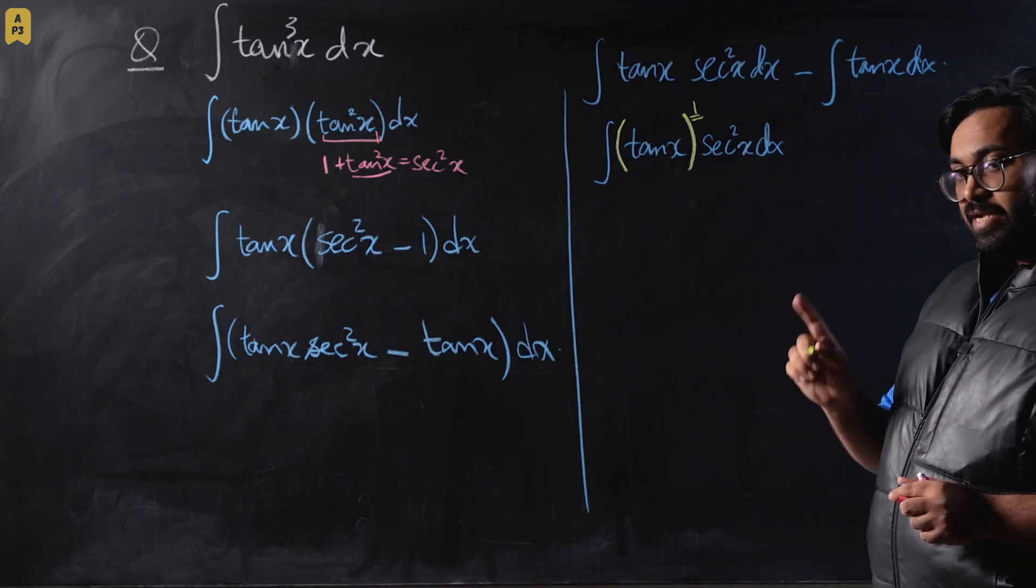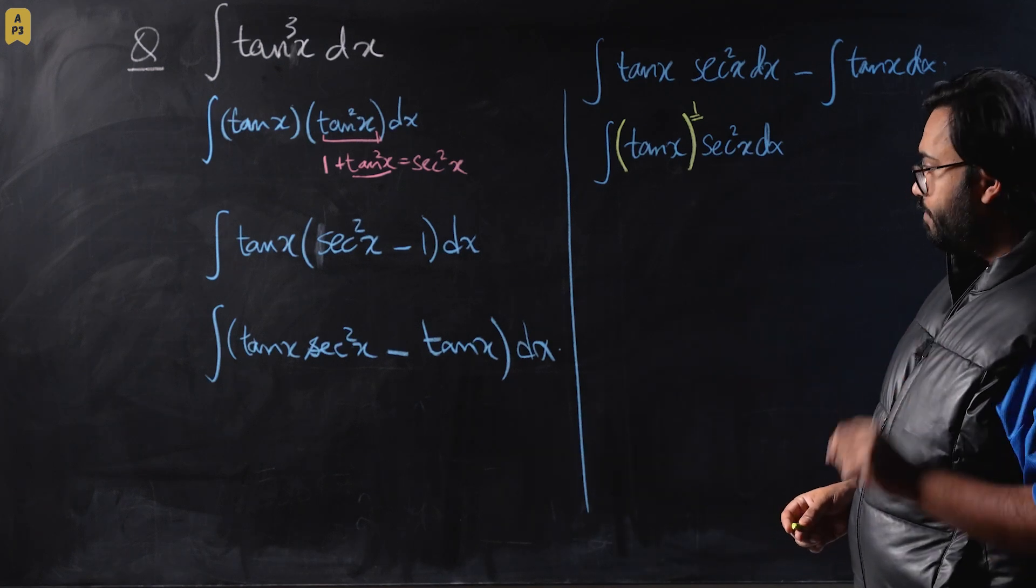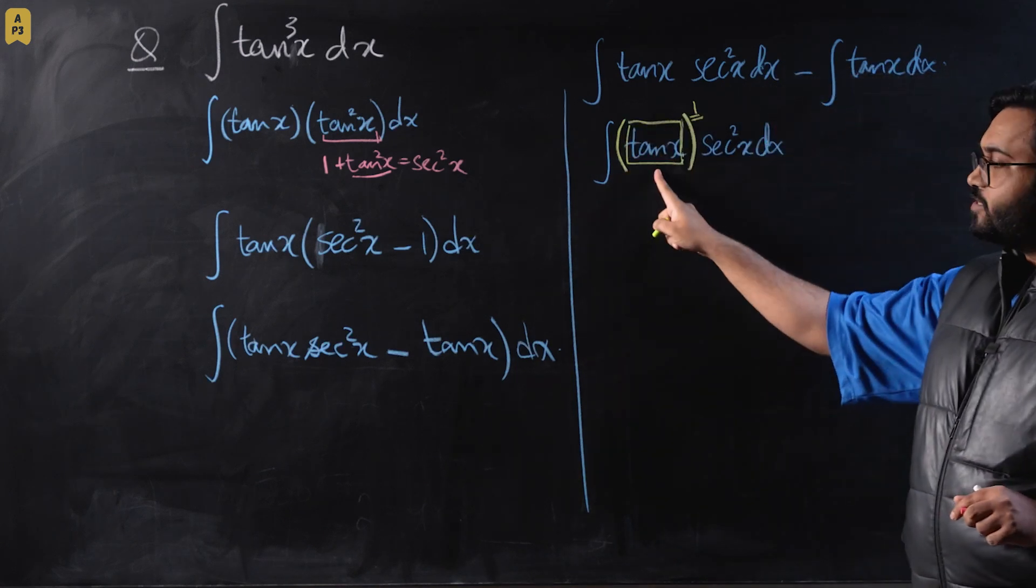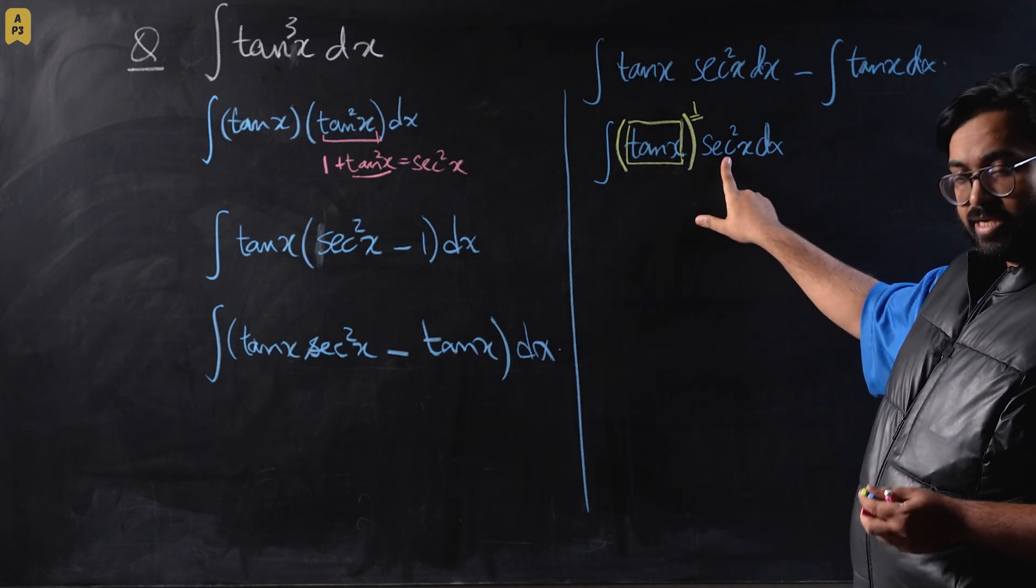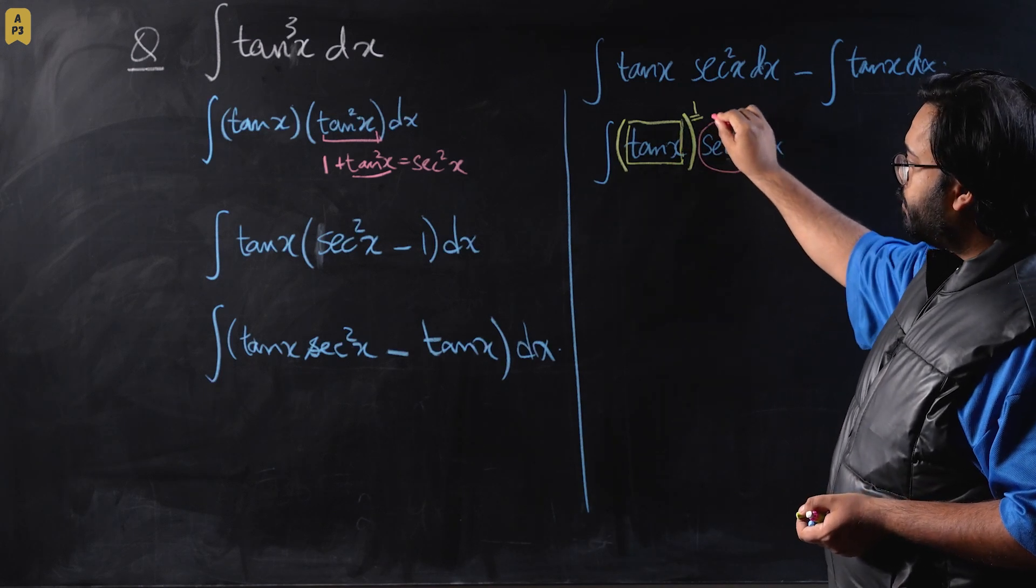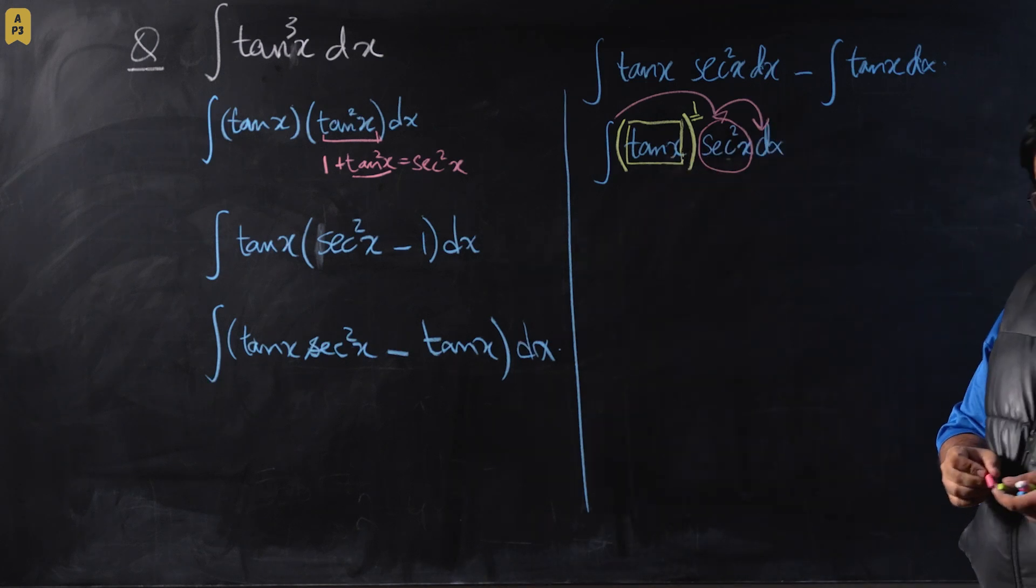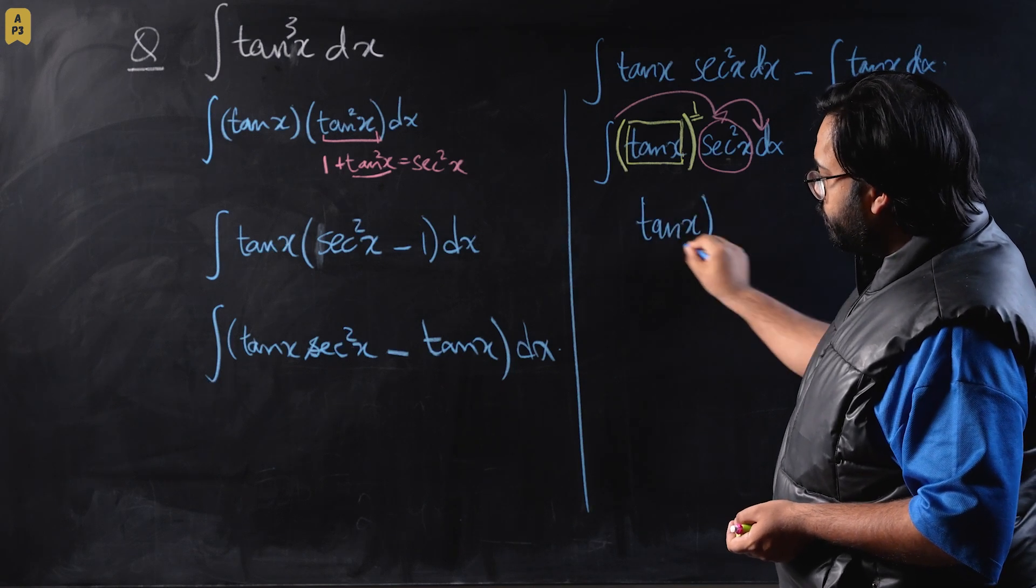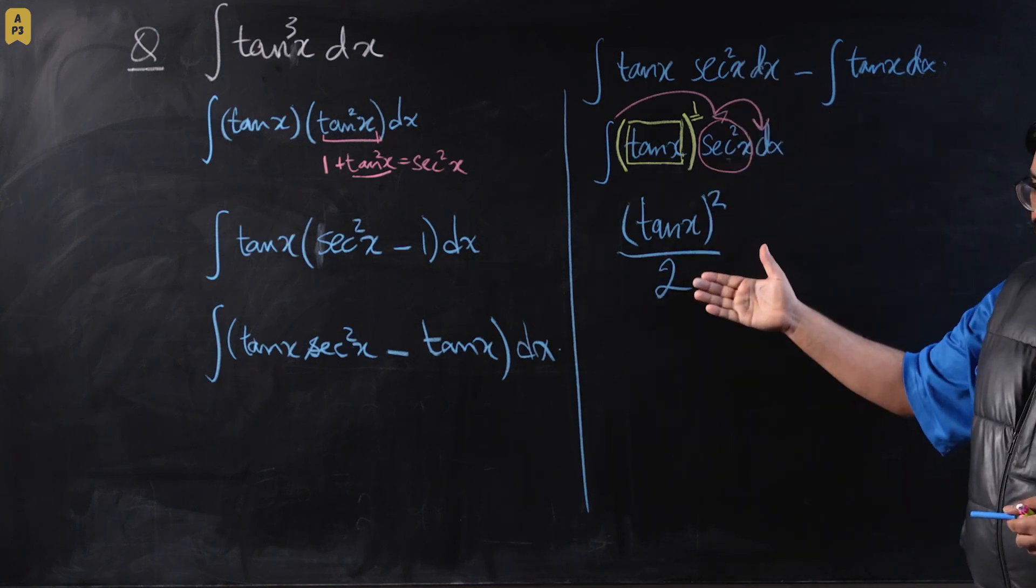Whenever tan and secant squared are in a product and you have to integrate them, power of tan is always the operator. Remember this. If power of tan is the operator, box is tan x, and we know differentiation of box should be present outside. We know tan x is differentiated to secant squared x. Our condition gets completed. Three things will disappear: differentiation of box and both integral signs will disappear, and you are allowed to integrate this power. The integration of tan x to the power 1 becomes tan squared x divided by 2.